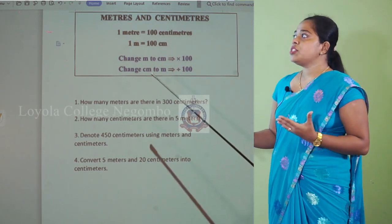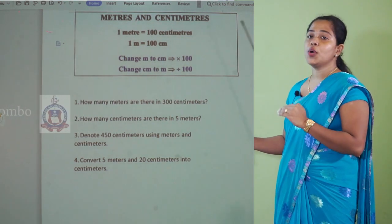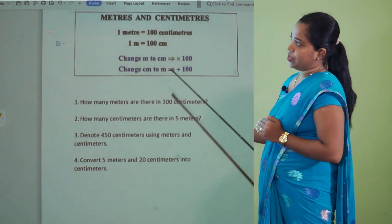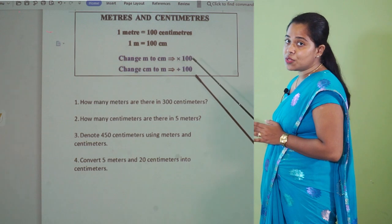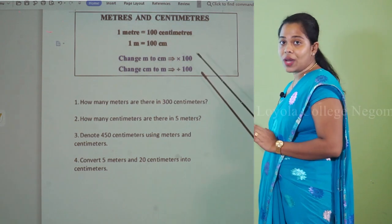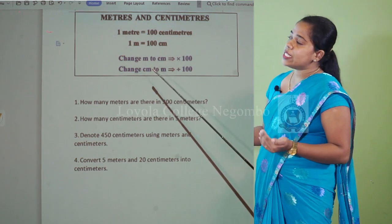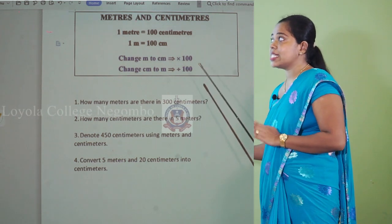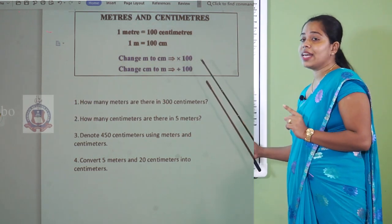Now we need to convert meters to centimeters, and also convert centimeters into meters. To convert meters to centimeters, what you must do is multiply the given number of meters by 100. When you convert centimeters into meters, you need to apply the opposite — that is, divide the given number of centimeters by 100.